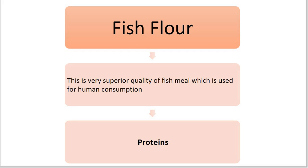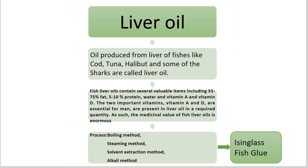The next by-product is fish liver oil. The oil produced from the liver of fishes like cod, tuna, halibut, and some sharks is called fish liver oil. In India, fish liver oil is extracted from the liver of sharks and rays such as Sphyrna, Pristis, Chiloscyllium, and Trygon. There are three classes of fish liver of commercial value.